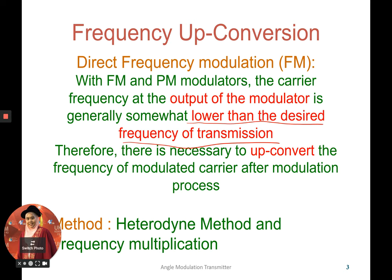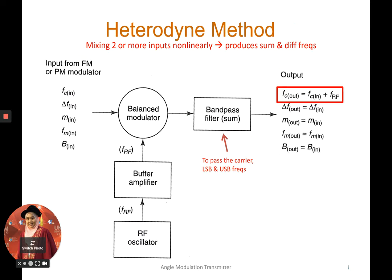There are two methods to up-convert the frequency. First is what we call the heterodyne method, and second is frequency multiplication. We've heard the term 'heterodyne' in Chapter 5 under the superheterodyne receiver — it carries the same meaning here. As a recap, heterodyne means mixing two or more inputs non-linearly to produce summation and difference frequencies based on the mixing process.